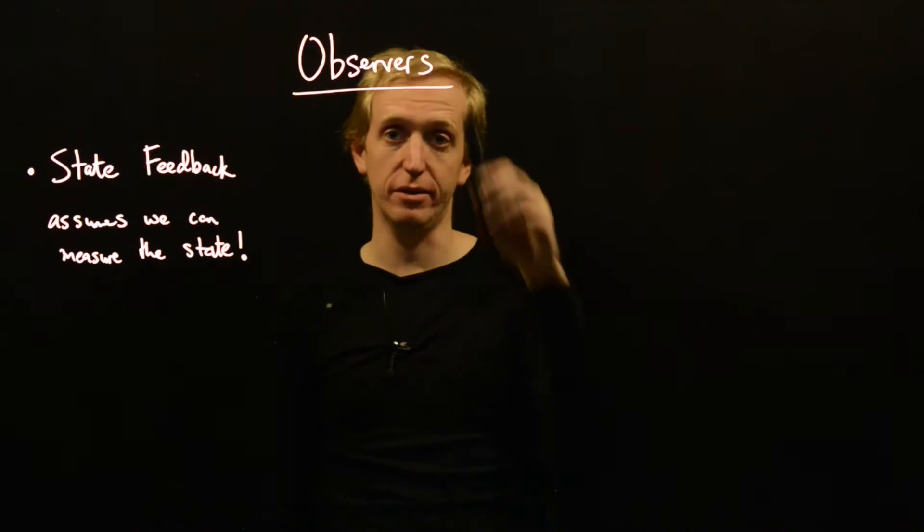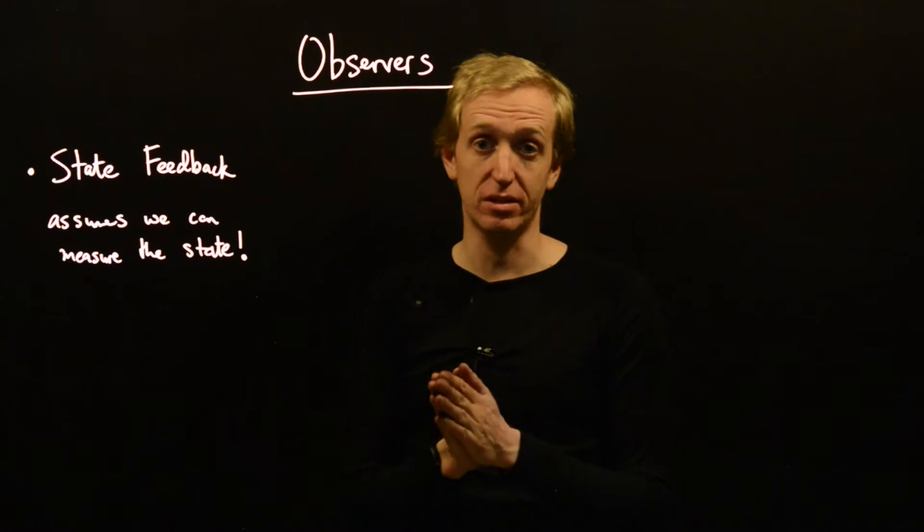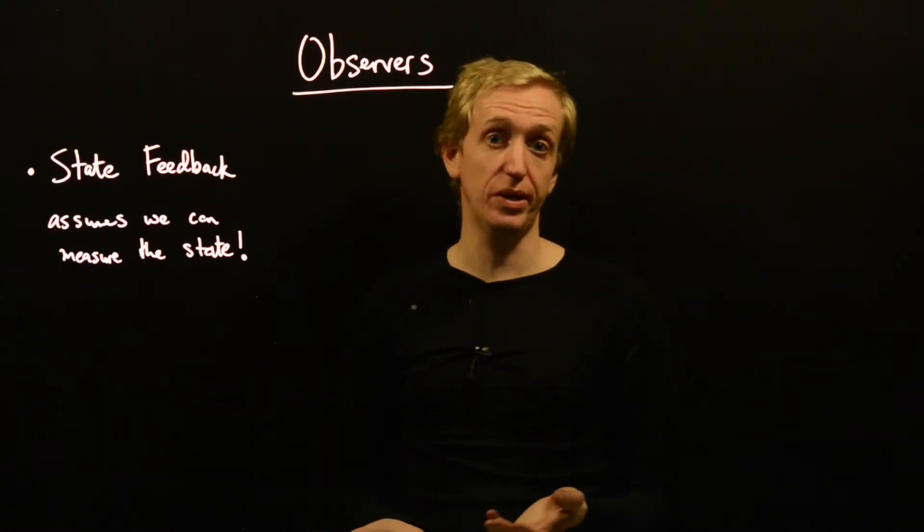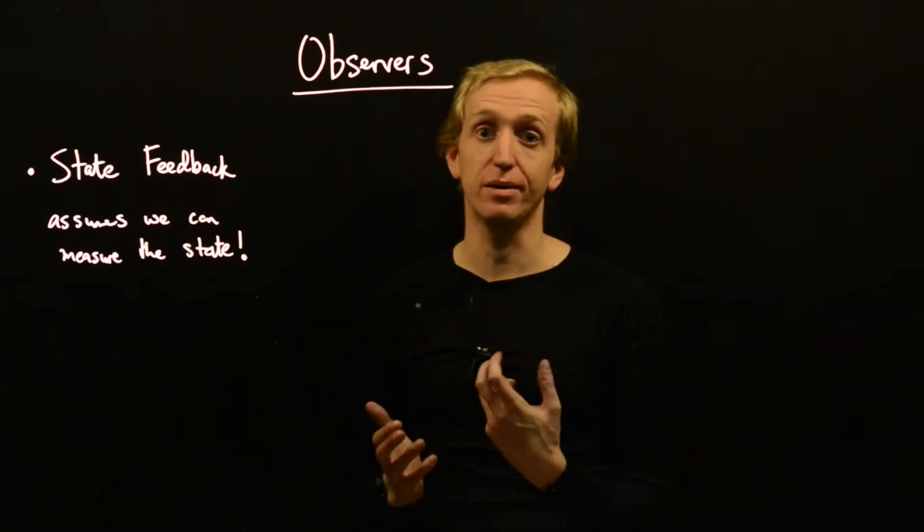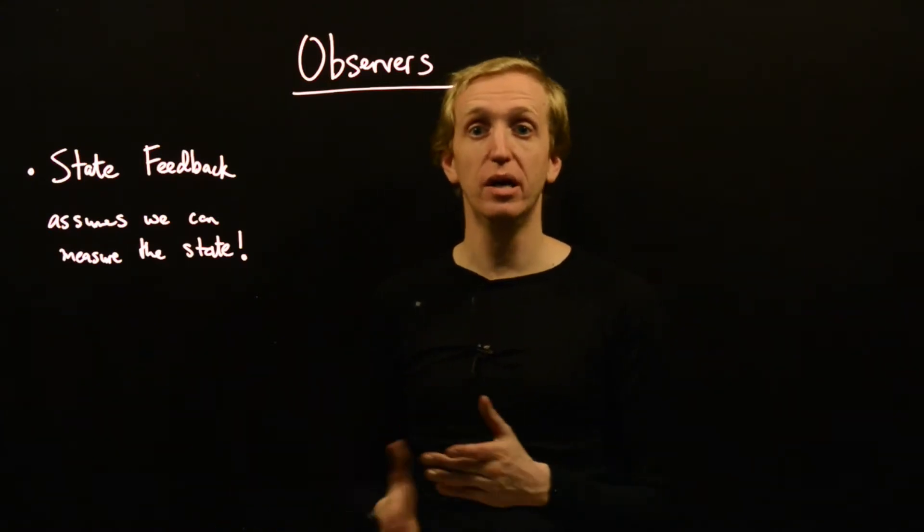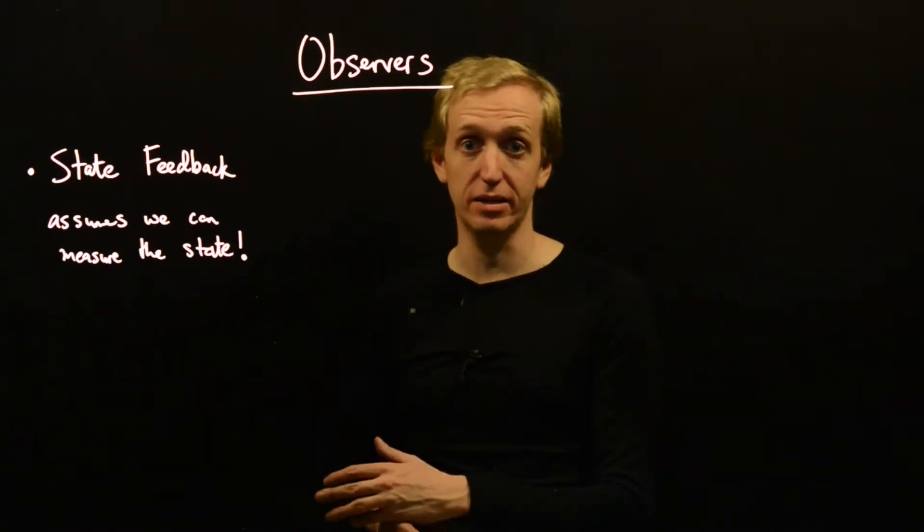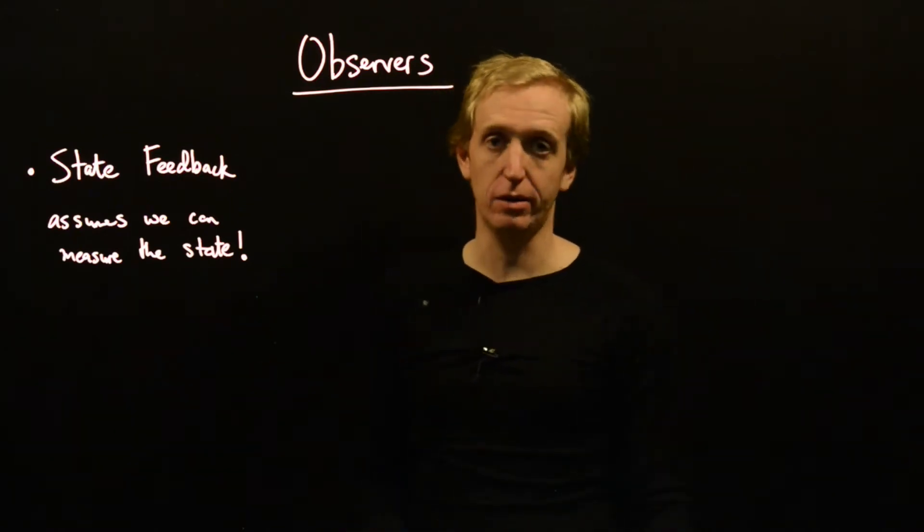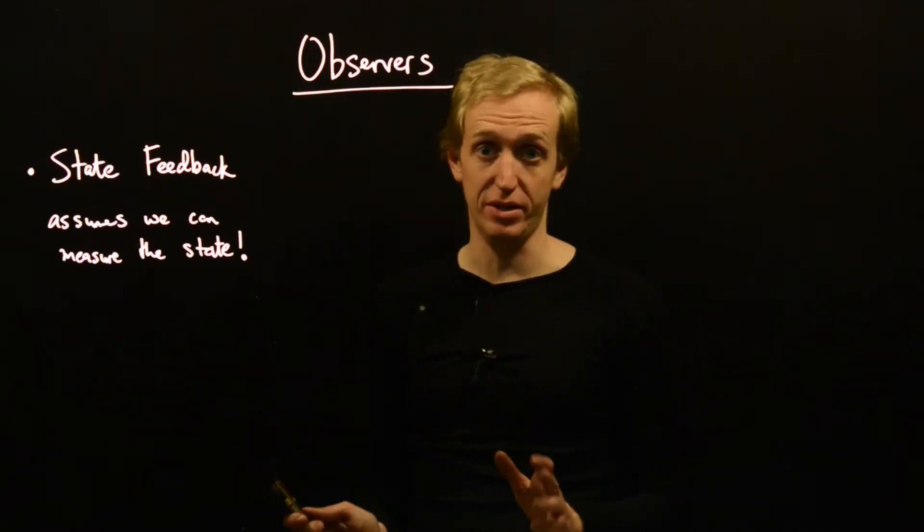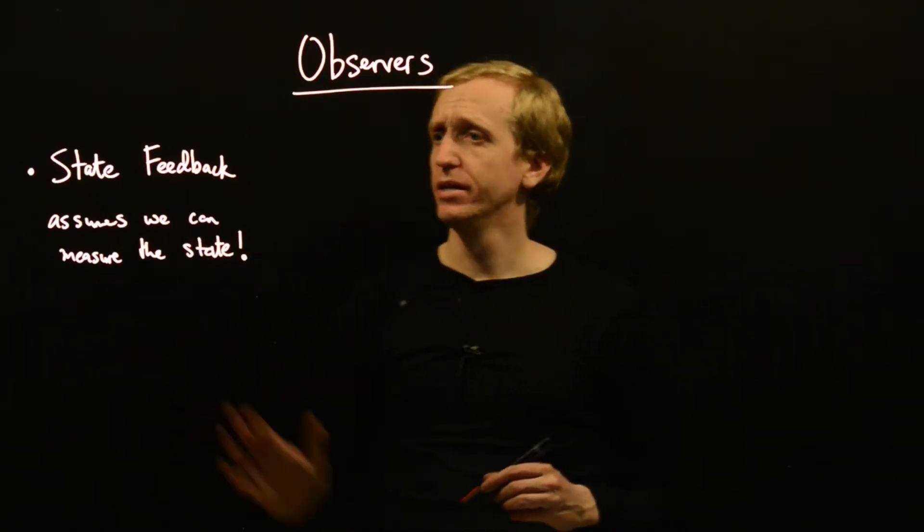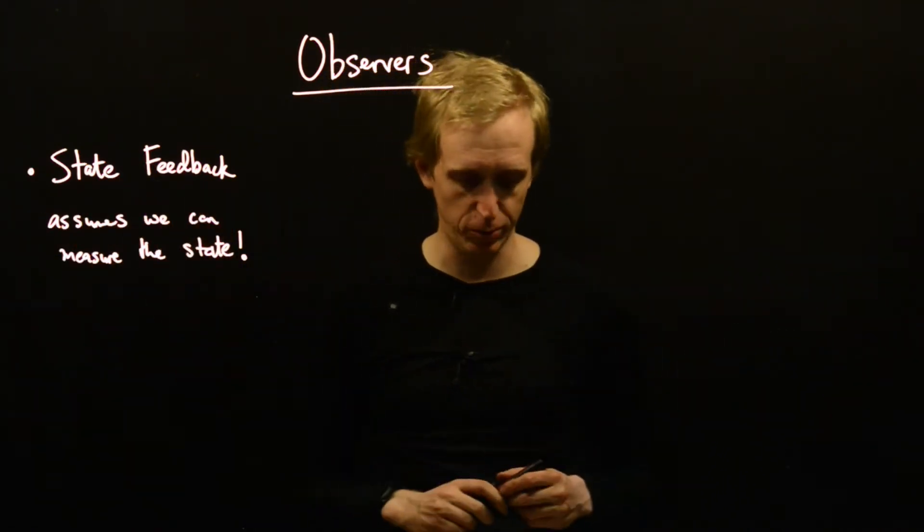This is what the role of an observer is. We cannot measure the system state, so what we're going to do is design an observer to estimate the system state. Then rather than applying our state feedback to the true state, which we can't measure, we're going to apply it based on our estimate of the state instead. State feedback assumes we can measure the state, we can't, so let's try to estimate it with an observer.